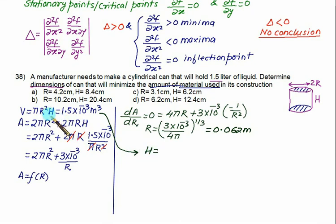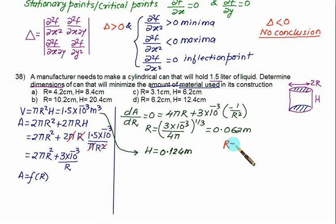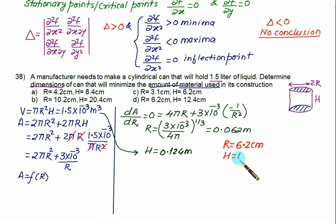Substituting r back into the volume equation to find the height h, we get h ≈ 0.124 meters. Converting to centimeters, r = 6.2 cm and h = 12.4 cm. So choice D is the correct answer.